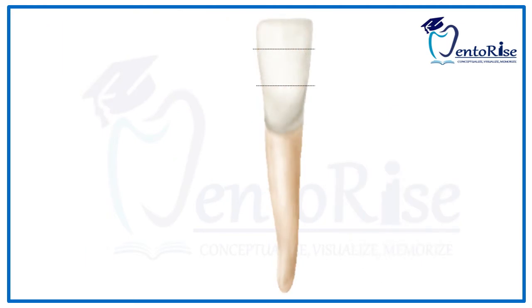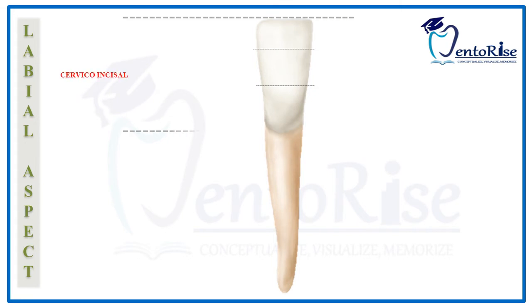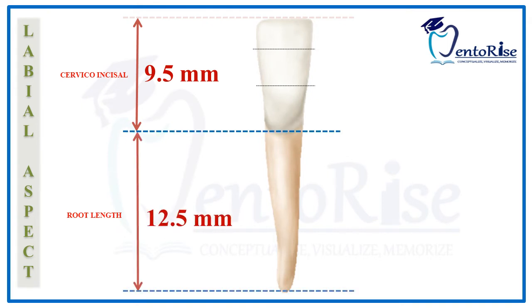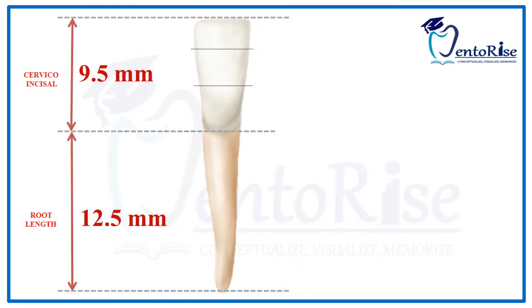Starting our discussion with the first aspect, the labial aspect, and considering the first heading: dimensions. The cervical-incisal dimension, from the incisal ridge to the lowest point on the cervical line, is 9.5 mm. The root length from the lowest point on the cervical line to the root apex is 12.5 mm. The mesodistal dimension, as measured from the contact areas present in the incisal third for both mesial and distal outlines, is 5 mm.